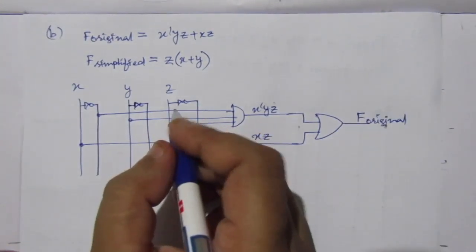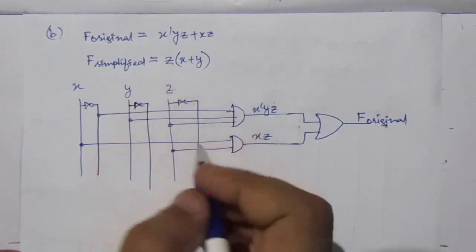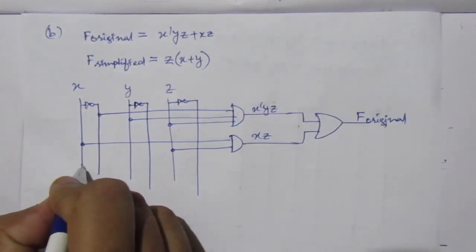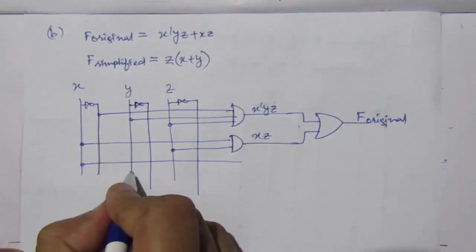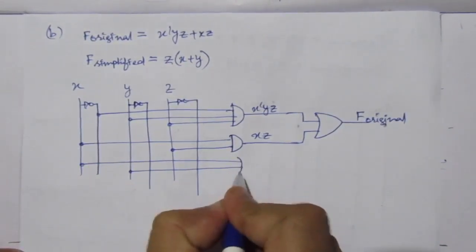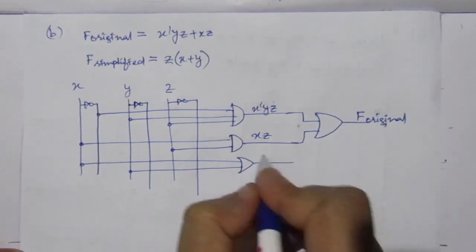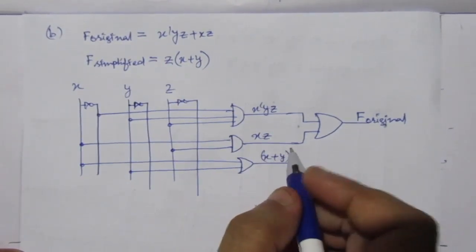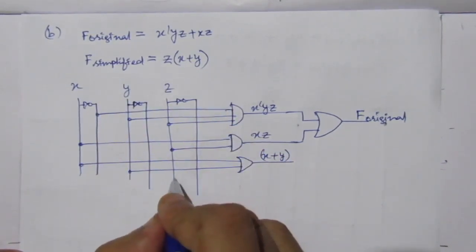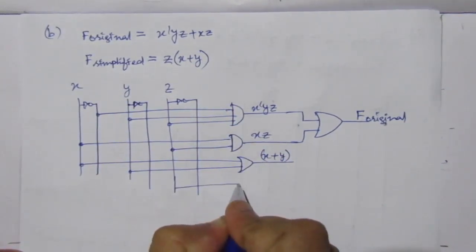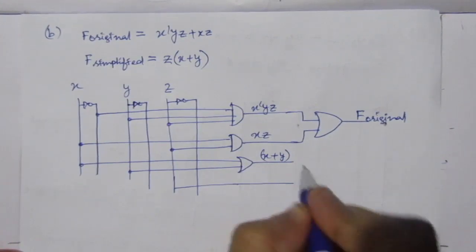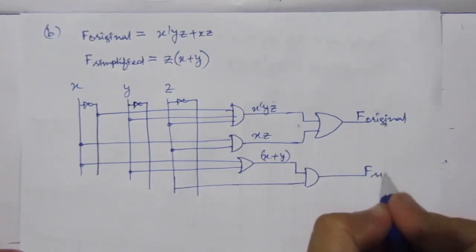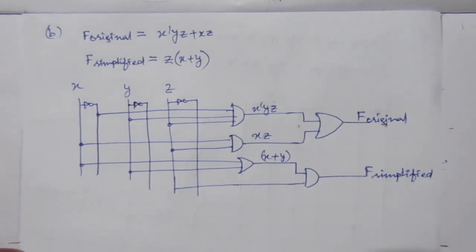For F simplified, which is Z(X + Y), first find X + Y by taking lines from X and Y and using an OR gate to get X + Y. Then take a line from Z and multiply using an AND gate — you get F simplified. This is the solution for part B.